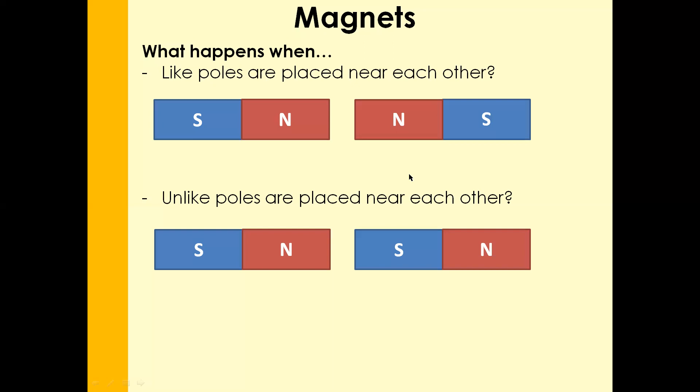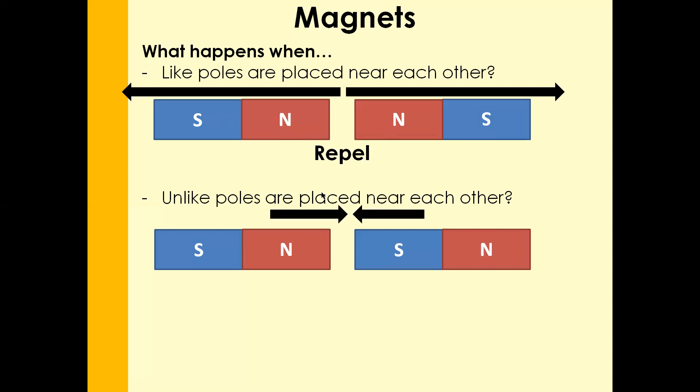Three, two, one. Let's have a look at the answers. Like poles, they repel each other. And unlike poles, they always attract each other.